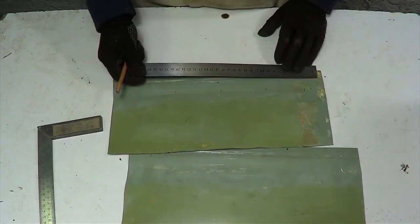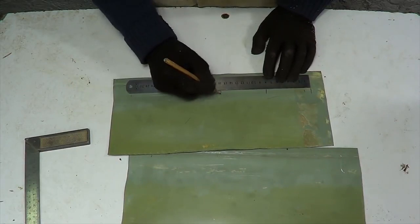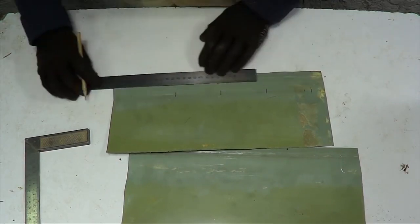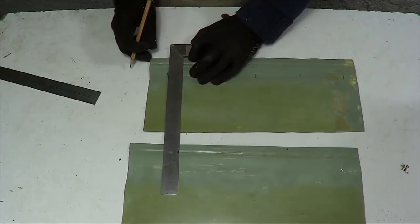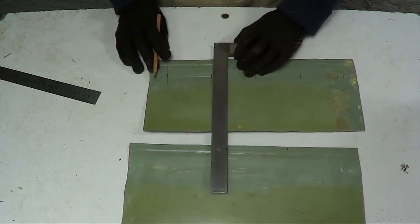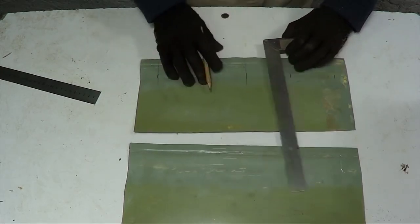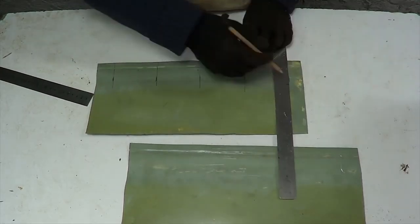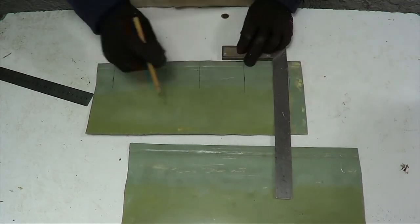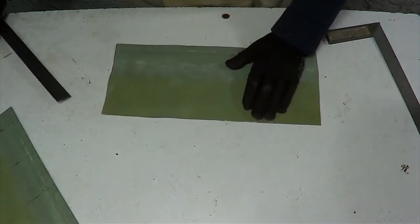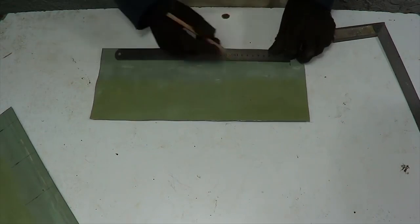Step back from the short edge of the sheet 2 cm and make marks every 8 cm. Thus, we have 5 tags. We mark the second sheet of metal in the same way.